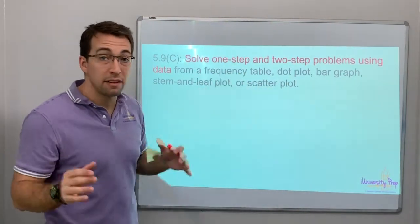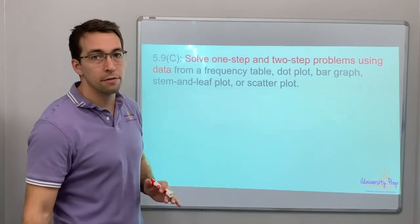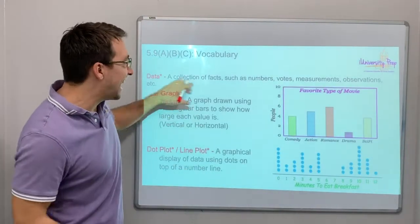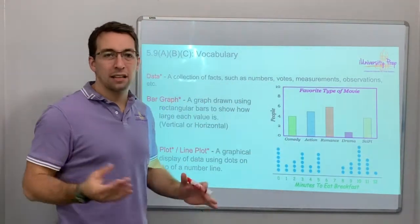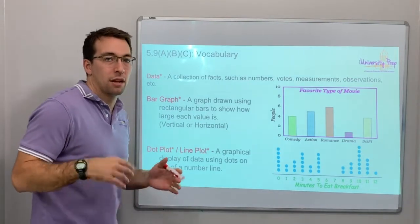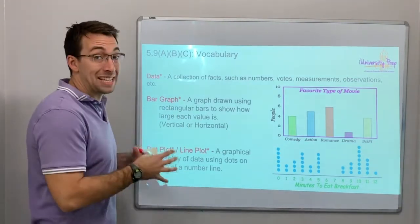So let's review them. Data. This is all data. So data is just a collection of facts, numbers. And then you represent that data with a bar graph or a dot plot, a scatter plot.